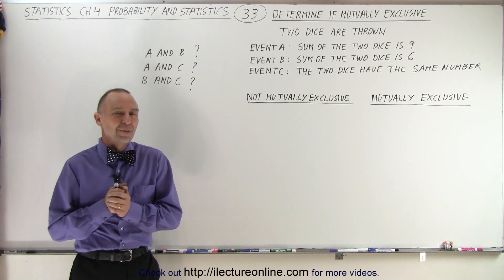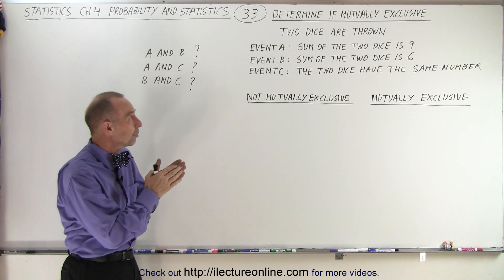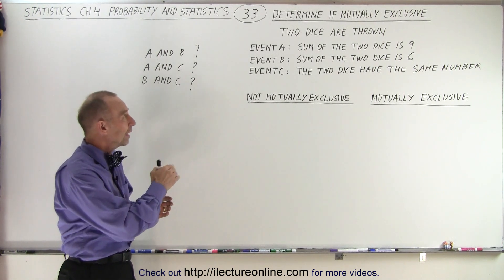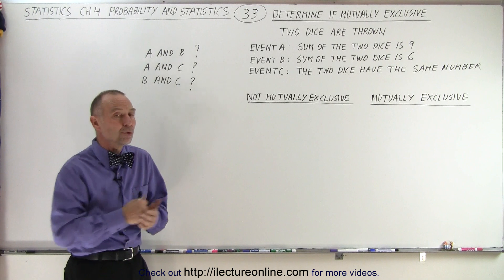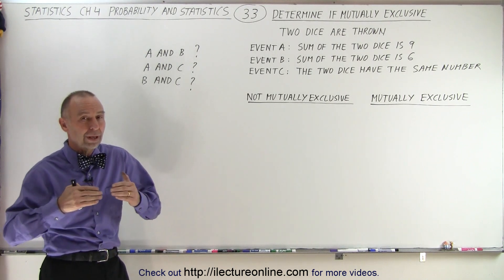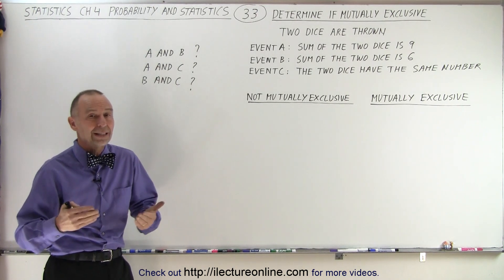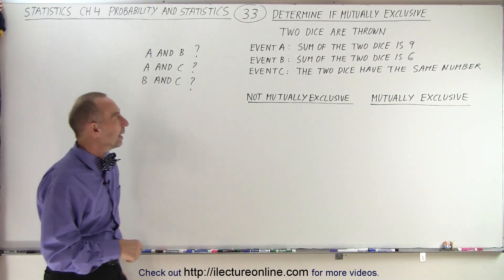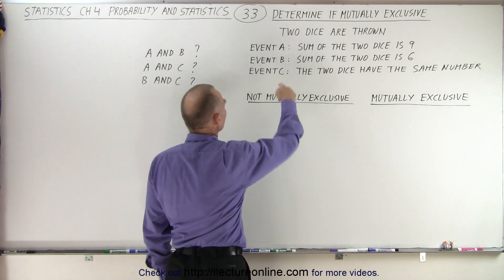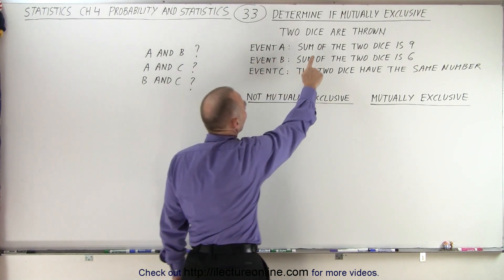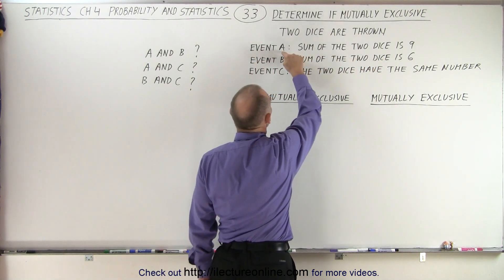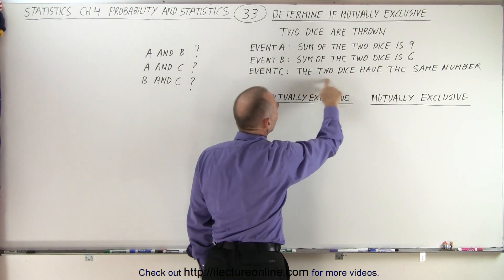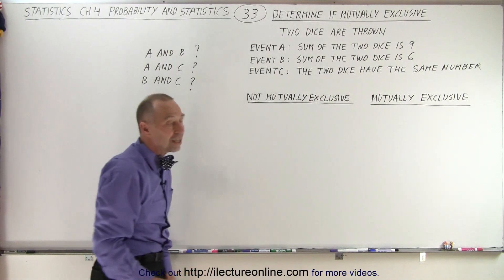Welcome to our lecture online. Here we have an example where we're going to determine if two events are mutually exclusive or not mutually exclusive. Remember, when we say they're mutually exclusive, that means one event cannot happen at the same time as another event can happen. We have three events defined: the sum of the two dice equal nine is event A, the sum of the two dice equal six is event B, and the two dice have the same number is event C.